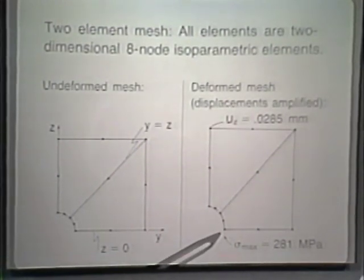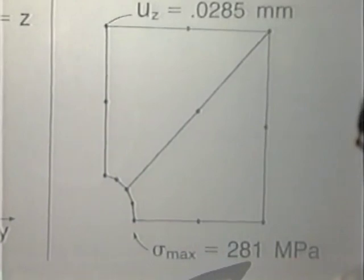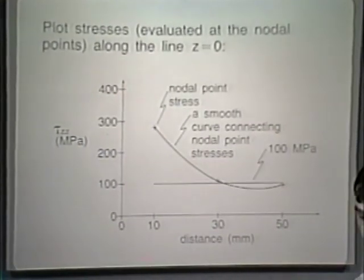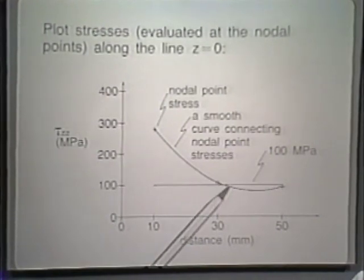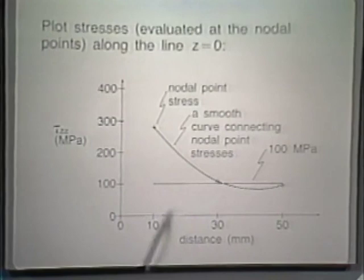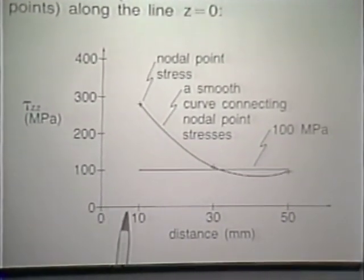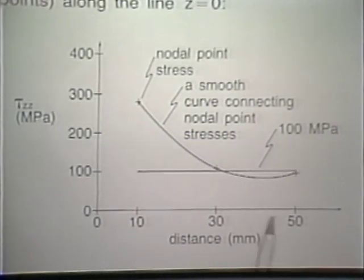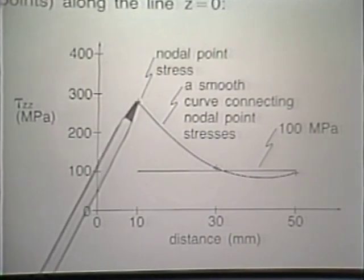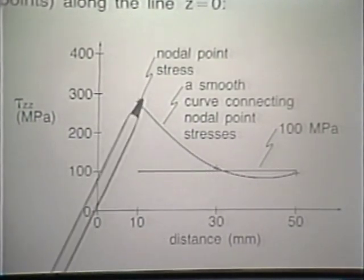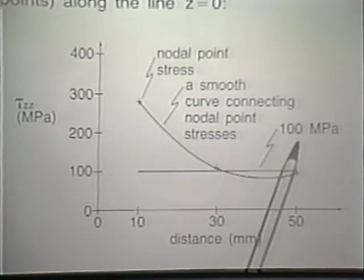The results of a two-element mesh for this problem show the quarter of the plate idealized using just two eight-node elements. We plot stresses along the line z equals zero and along the diagonal line y equals z as a function of y. The displacements somewhat amplified after load application show a maximum displacement u-z of 0.0285 millimeter, and the maximum stress at one point is 281 MPa.